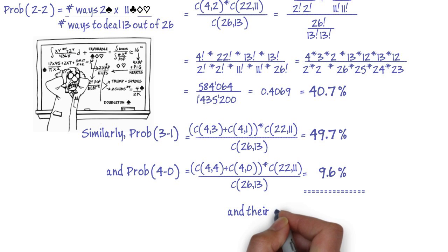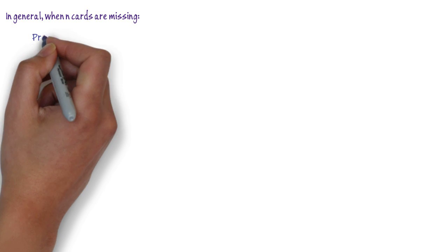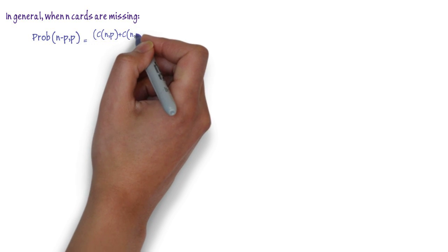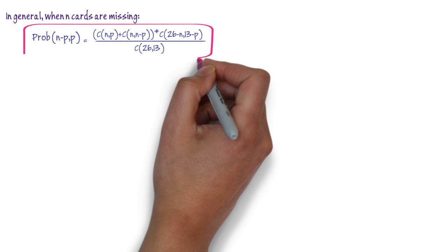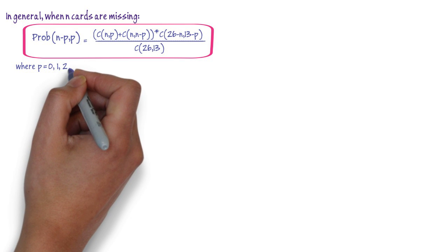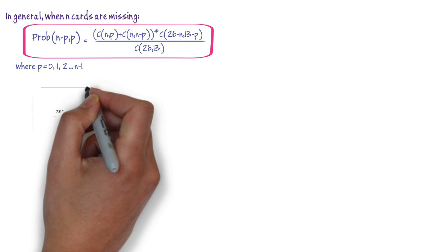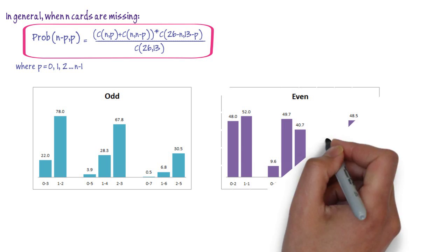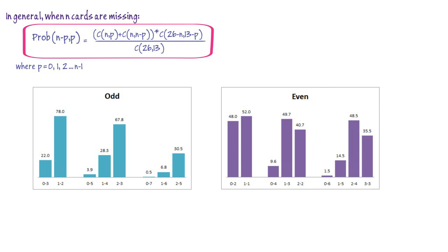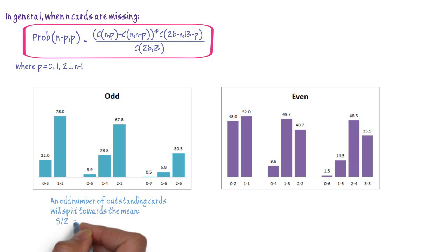Note that their sums equal 100%. In general, when n cards are missing, the probability for each distribution is given by the following formula, where p equals 0, 1, 2, up to n minus 1. Here are the probabilities for the most common splits — for an odd number of outstanding cards, and for an even number of outstanding cards.